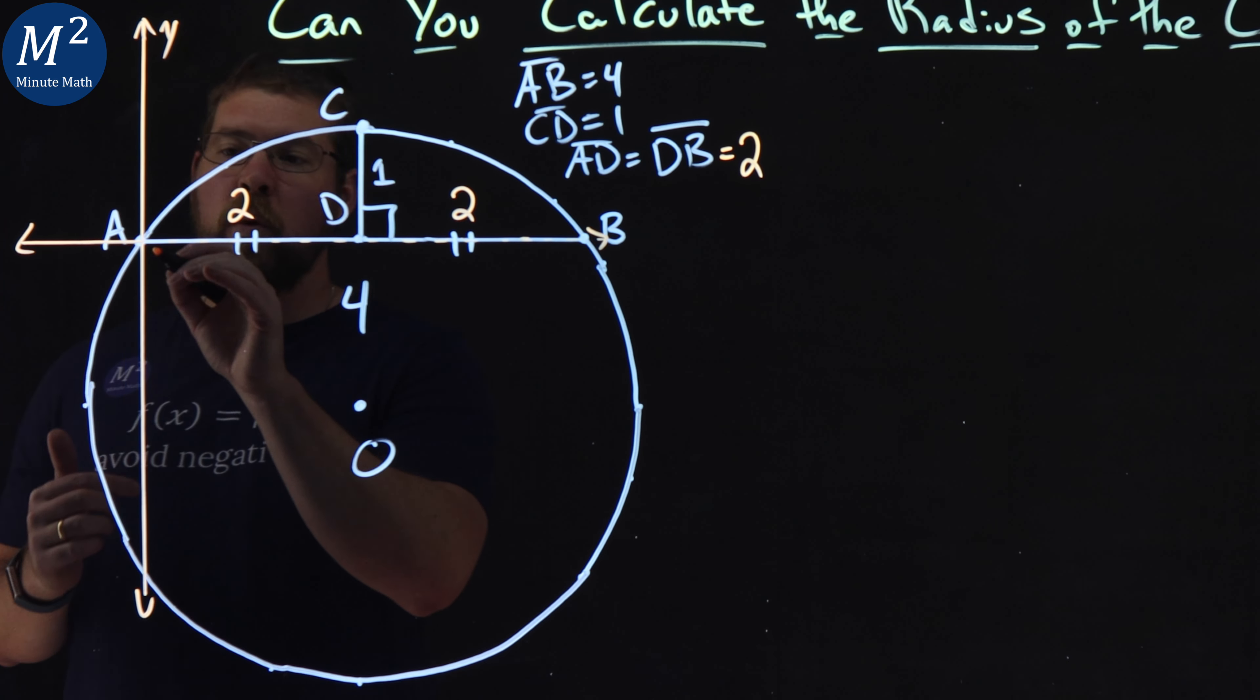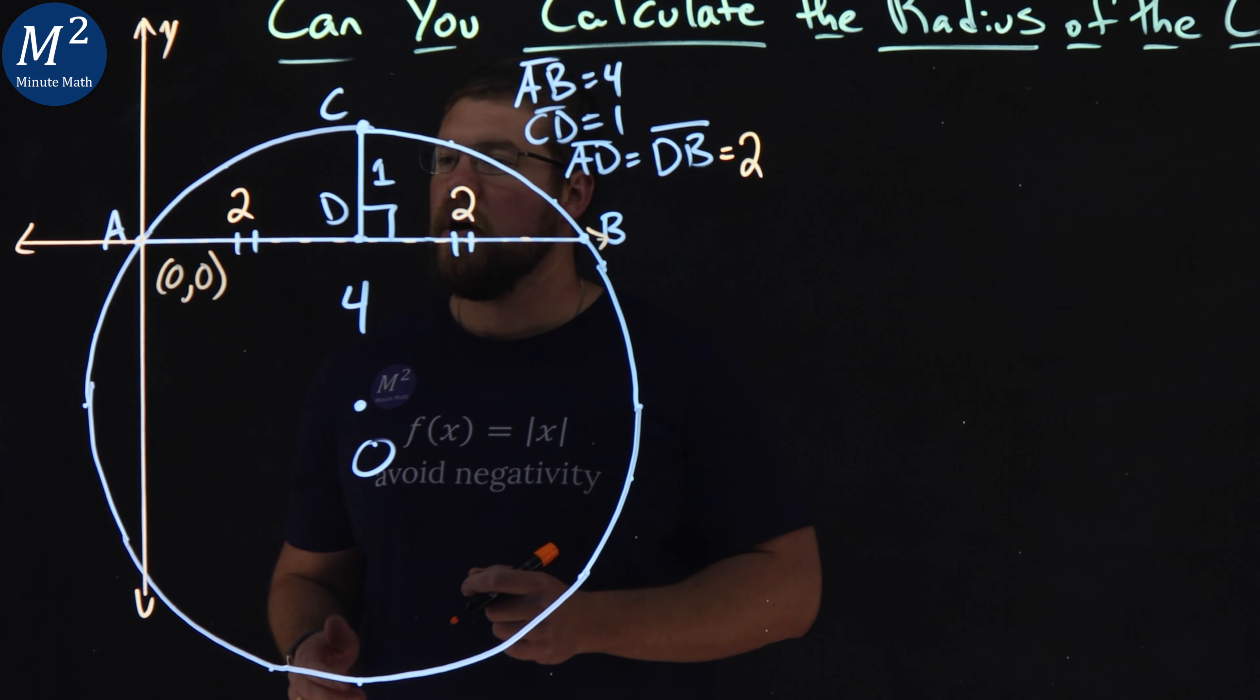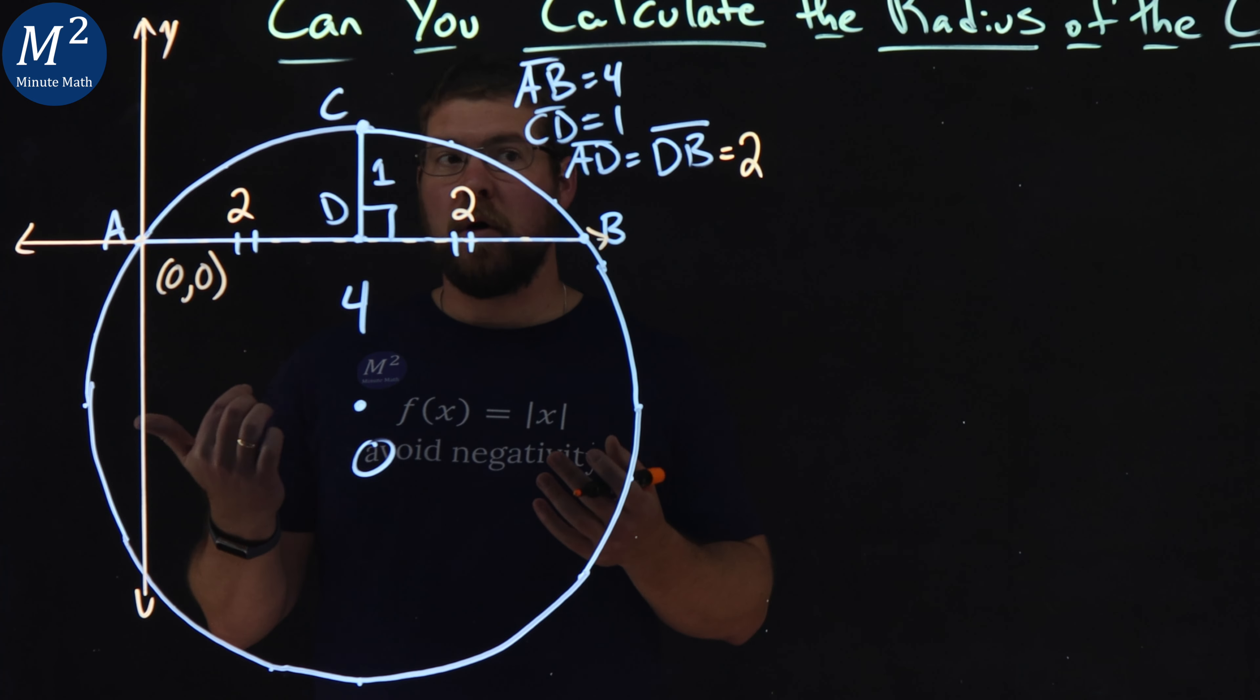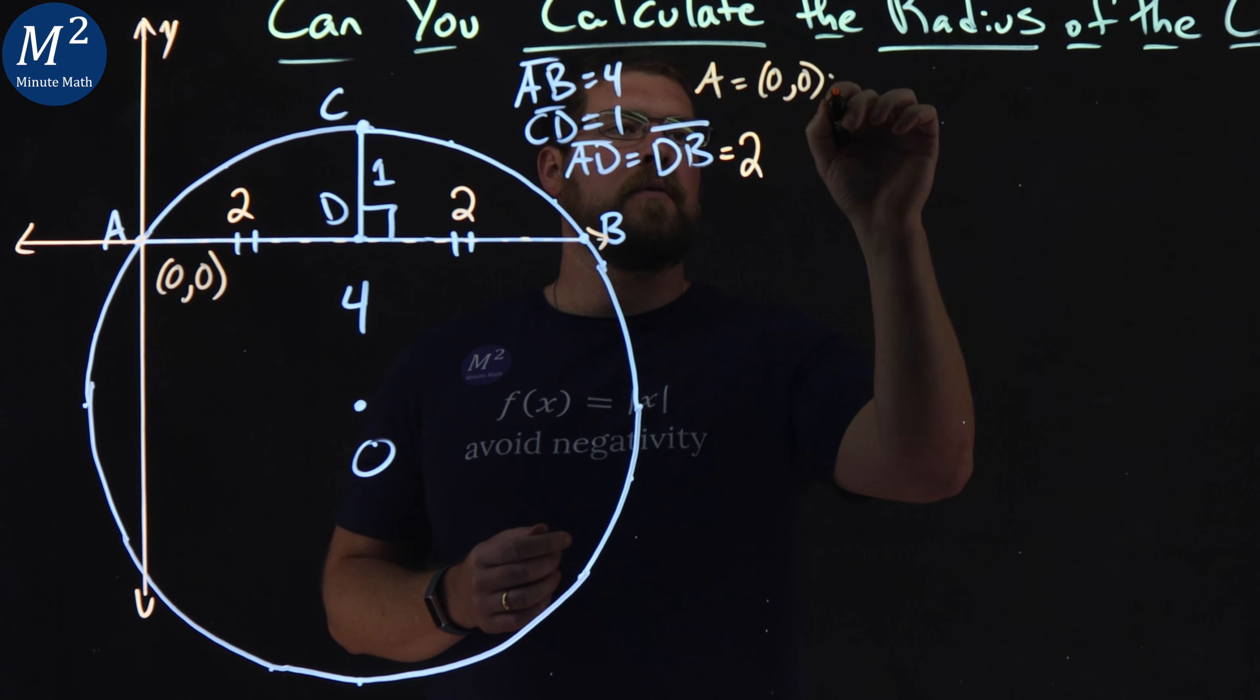Now with that, we're going to say the origin A is our coordinate point zero, zero right here. So A is our zero, zero. How can we figure out what the other values are? So if A is a coordinate point zero, zero, what about D?